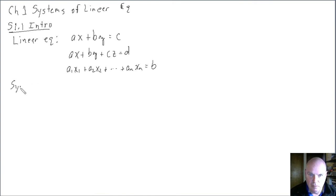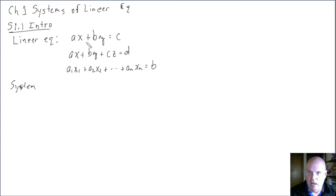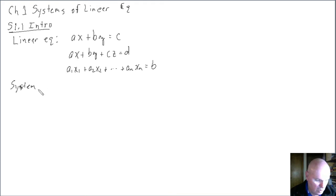These are linear equations because the variables just appear as the first power — x, y. There are no x-squared or x-cubed or higher-order terms, and there aren't even any cross terms of the form xy.